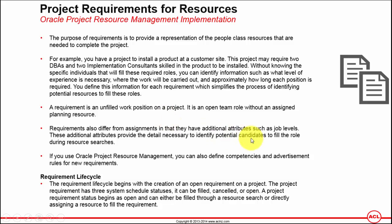Requirements also differ from assignments in that they have additional attributes such as job levels. These additional attributes provide the details necessary to identify potential candidates to fill the role during resource searches. For example, additional attributes could be the skills of the apps DBA, their level of English, or business communication. Using Oracle Project Resource Management, you can define competencies and advertisement rules for new requirements — once you define your requirements, you can optionally advertise that requirement within your organization or across all organizations within your business group.